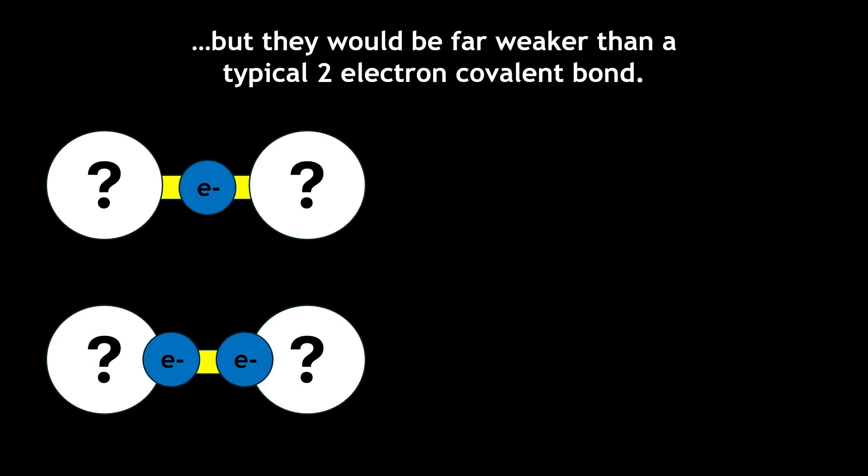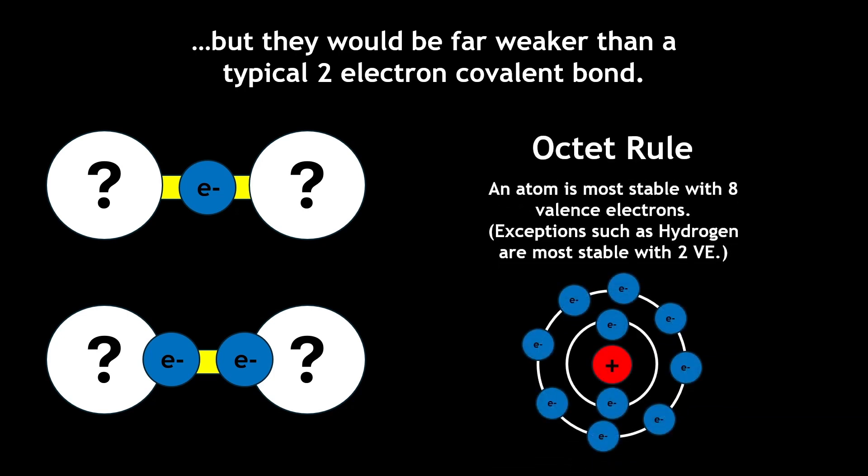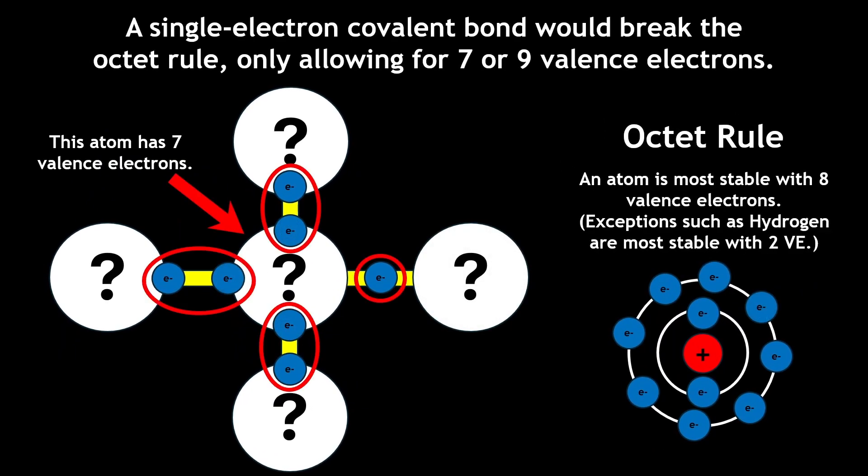At the time, the idea seemed outrageous, especially because of the octet rule. The octet rule states that atoms bond to achieve their most stable configuration of eight electrons in their outermost shell. A single electron covalent bond would only allow for atoms to have seven or nine valence electrons, but not eight.